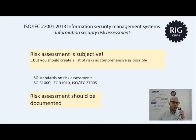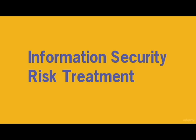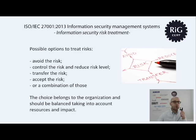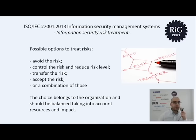Information security risk treatment is the next logical step. We have evaluated the risks, know their levels, and decided which are acceptable and which are not — now we must treat them. There are several options. First, avoiding the risk — the most straightforward but difficult to implement because it requires stopping a risky activity. Second, controlling the risk by reducing its level — reducing either the potential impact, the likelihood, or both through controls. Third, transferring the risk to a third party; insurance companies typically provide this service.